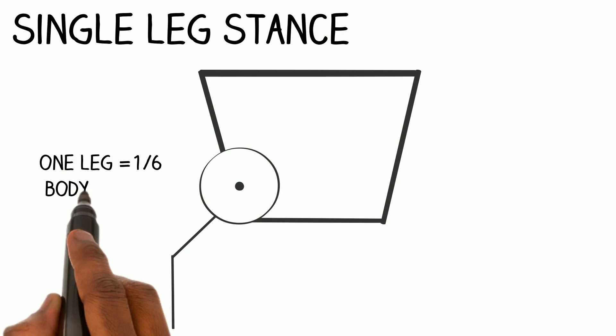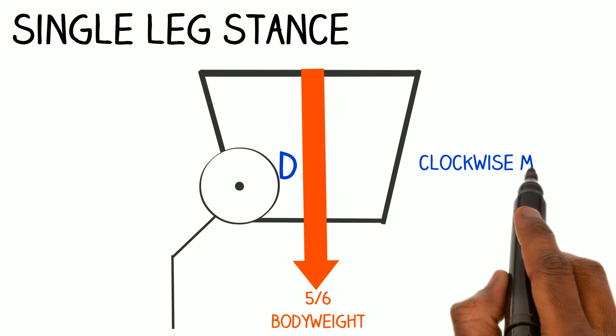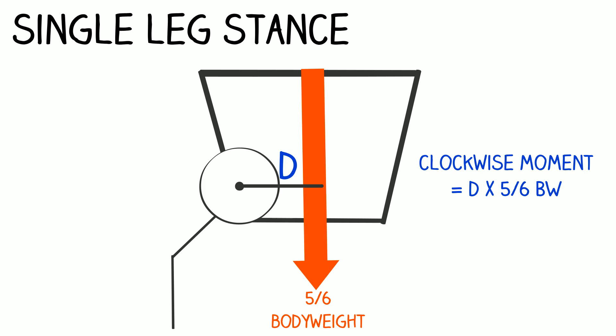In single leg stance, one leg is assumed to weigh one-sixth of the body weight and the other five-sixths is through the center of mass. The moment arm is the perpendicular distance D from the hip's center of rotation to the force through the center of mass.